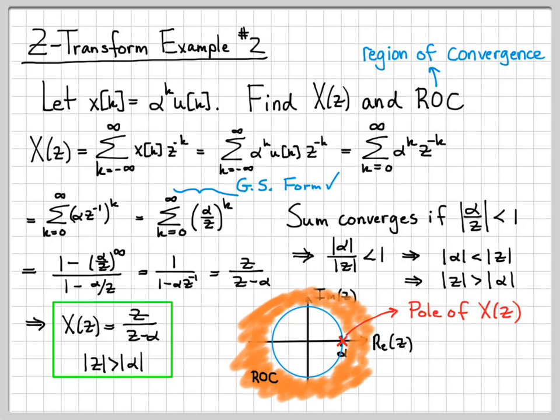So that wraps up this example, starting with a discrete time signal X of K. We have computed the Z transform. We've found the region of convergence. We have sketched the region of convergence. We've identified the pole of X of Z, which is a spot in the Z plane where X of Z equals infinity.